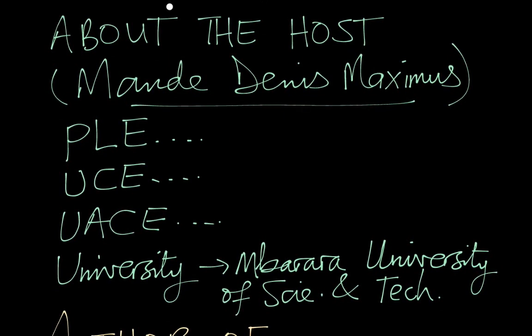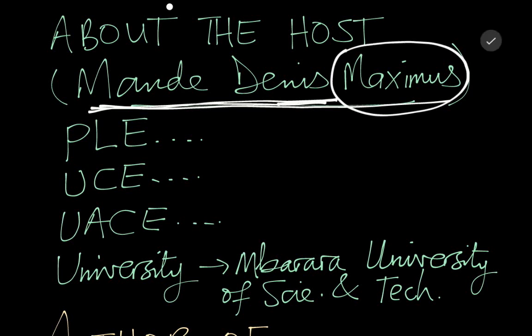Just a few details about me. I am Monday Dennis Maximus officially. I did PLE in 2003 in Bugiri district. I did UCE from a school called Walude Primary School in Bugiri. UCE I did from Iganga High in 2007, and I was at Iganga High.